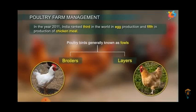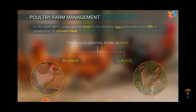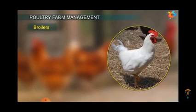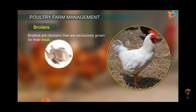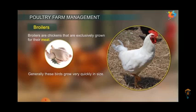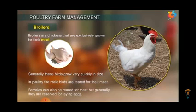Now we have two categories of poultry birds: broilers and layers. Broilers are fowl or chickens which are reared for meat. They are reared only for meat production. These are the chickens that are exclusively grown for meat.